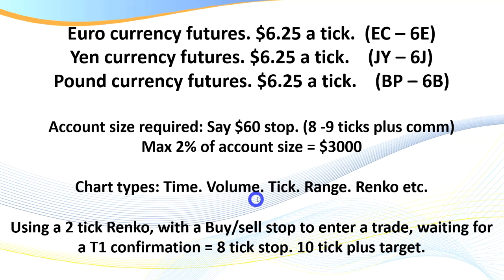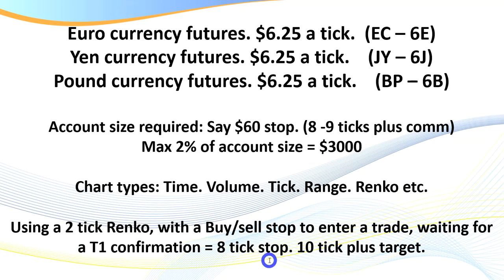For chart types, we've got time, volume, tick, range, and Renko charts — I love both tick, range, and Renko. If we're trading a 2 tick Renko, we'll use a buy or sell stop, waiting for what I call a T1 confirmation or three high closes, and we'll have an 8-tick stop. Eight ticks at $6.25 is $50, so your stop size is fairly manageable, and a 10-tick target is $62.50.